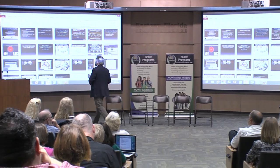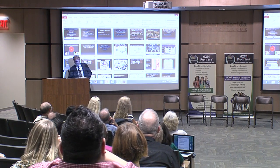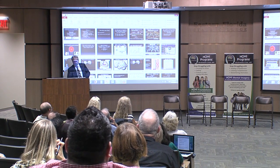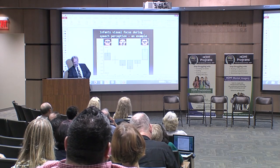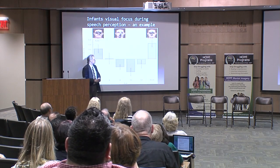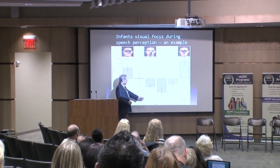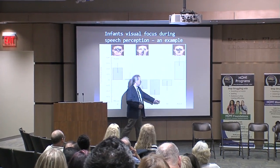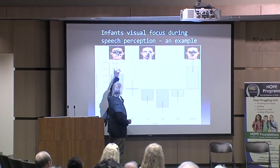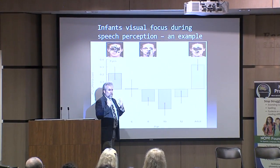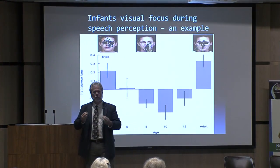Somebody studied it with a laser eye tracker study to figure out, in a sample of kids, at what age do they really start watching your mouth. These are four month olds, six, eight, ten, twelve month olds compared to adults. The laser eye tracker could tell where the child's pupil is focusing.